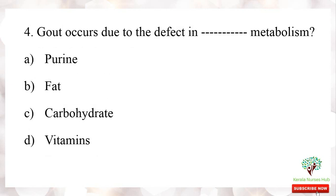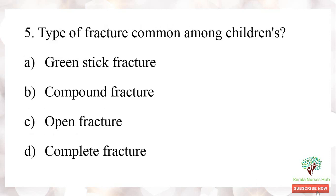Next question: gout occurs due to the defect in which metabolism? The options are purine, fat, carbohydrate, and vitamins. Gout commonly occurs due to the defect in purine metabolism. The type of fracture common among children — the options are greenstick fracture, compound fracture, open fracture, and complete fracture.